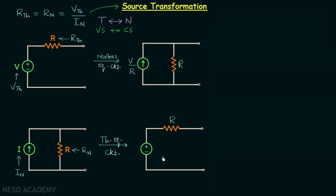The voltage source is Vth, and Vth equals Rn multiplied by In, so it has the value Rn times In, which equals R times I, written as IR. Whenever we have a current source in parallel with a resistance, we can convert it to a voltage source in series with the same resistance. The voltage source value equals the current multiplied by the resistance from the initial configuration.